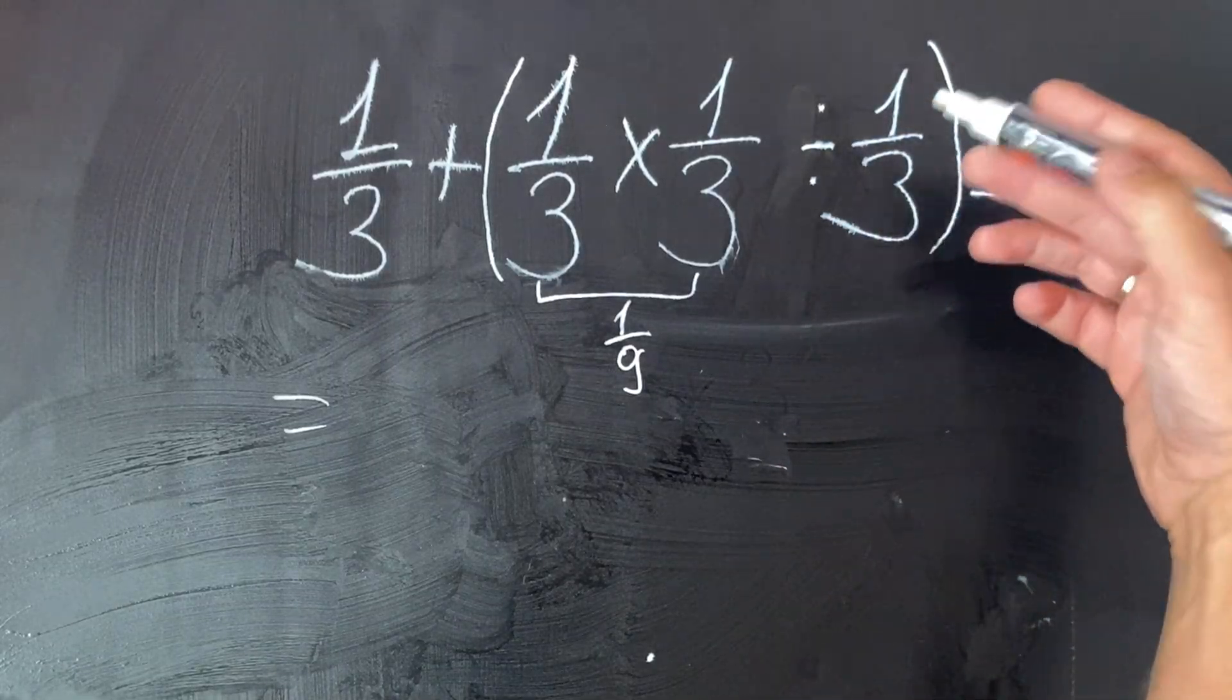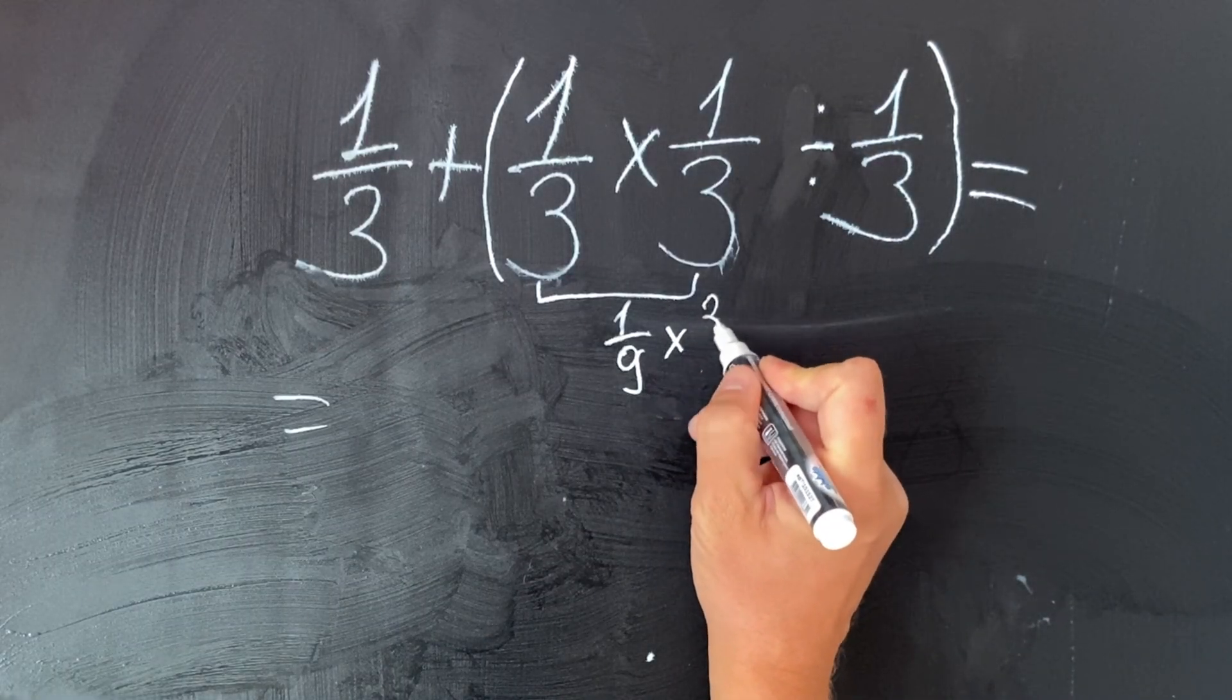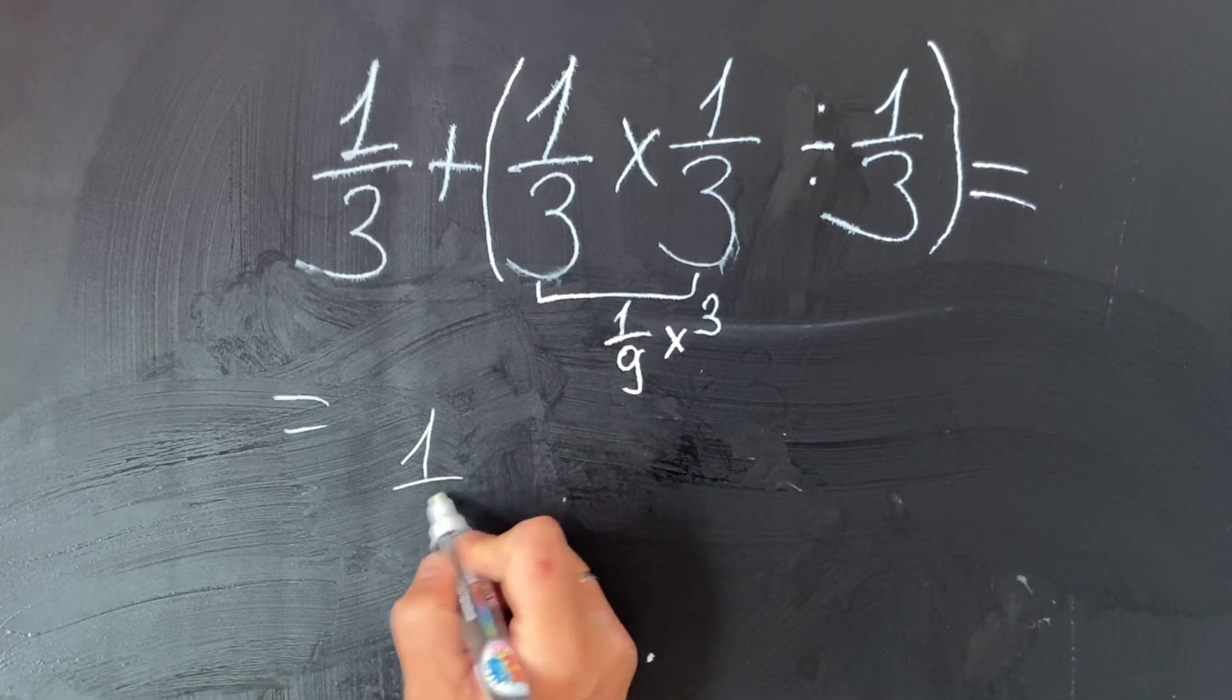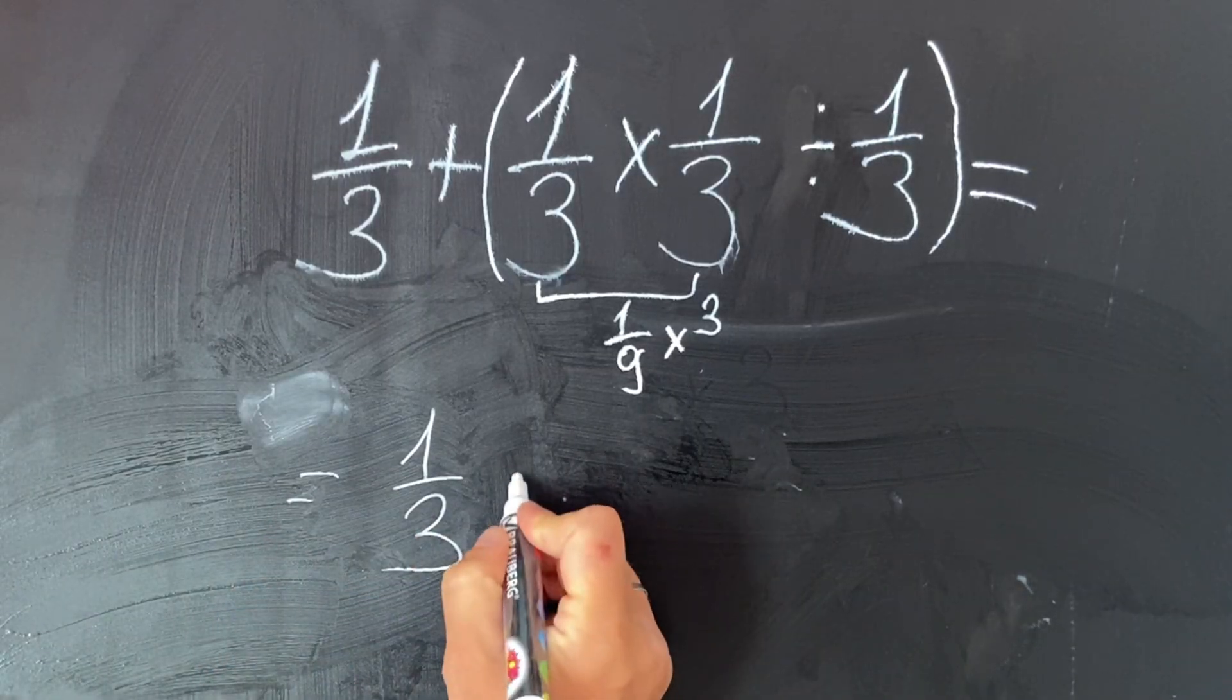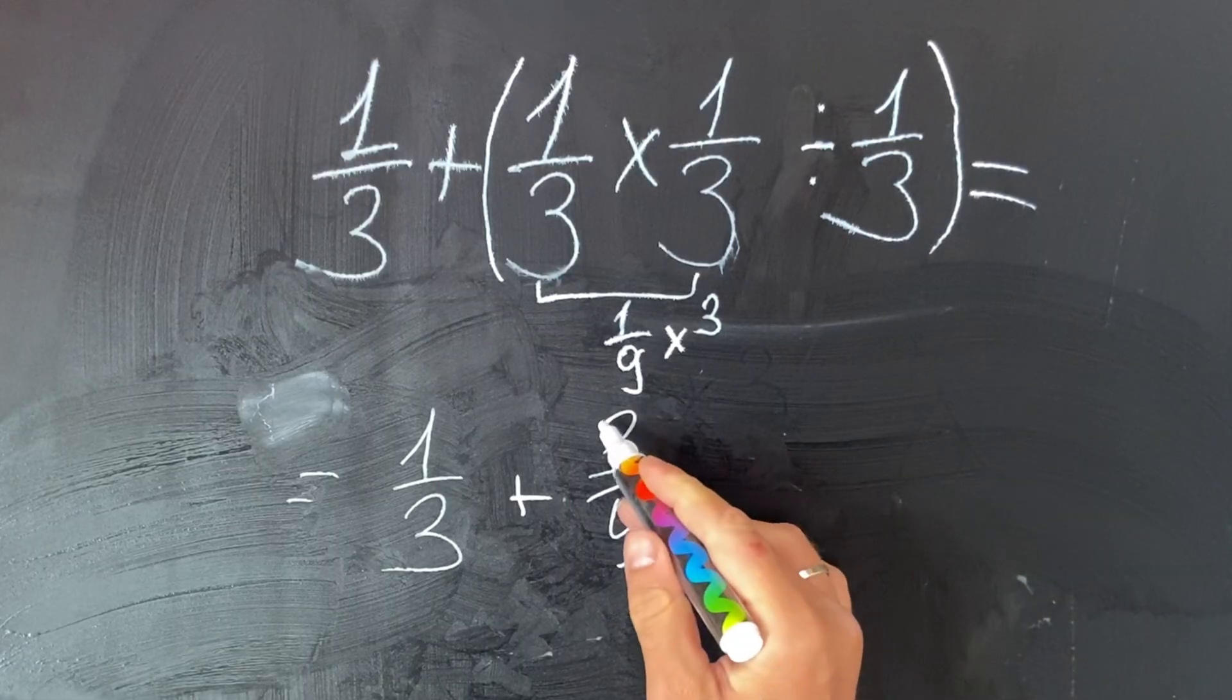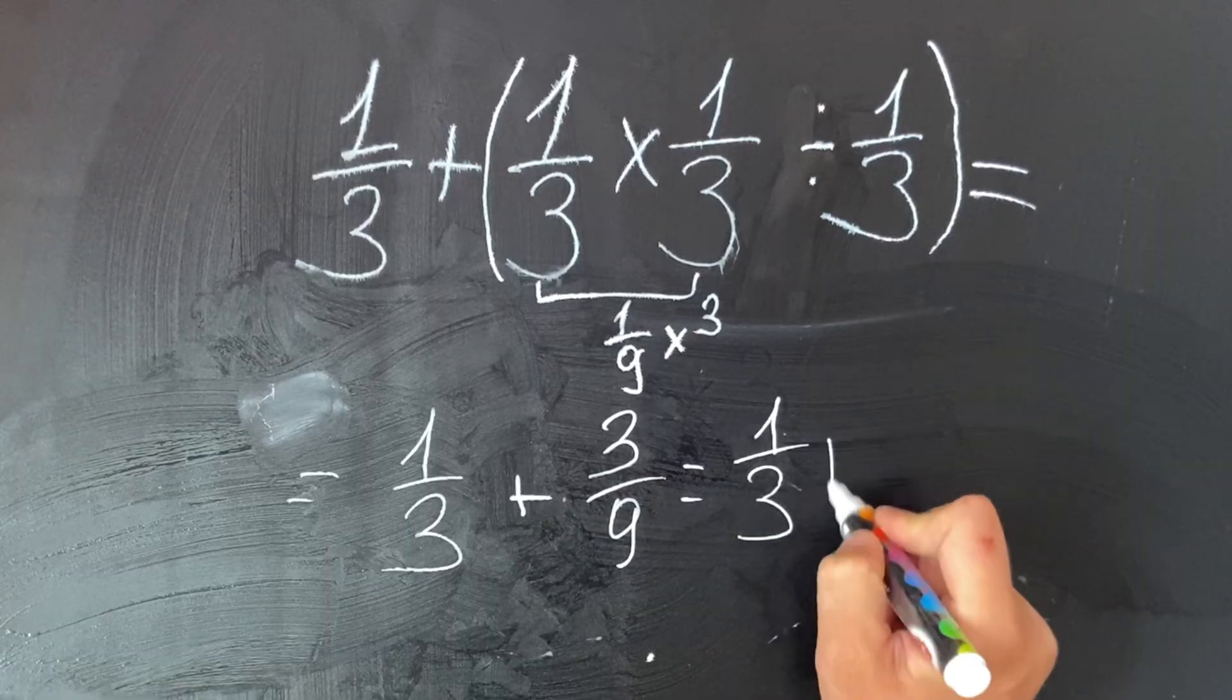We all know that we are flipping it out, so it becomes multiplied by three. So in this case what we have is one-third plus three-ninths. Here we simplify by three and we get one-third plus one-third.